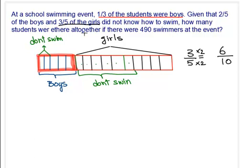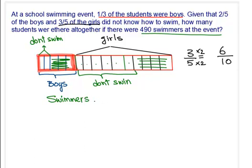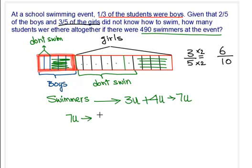How many swimmers are there altogether? For boys, 3 units swim. For girls, 4 units swim. So total swimmers equals 3 units plus 4 units equals 7 units. The number given is 490 swimmers, so 7 units equals 490, meaning 1 unit equals 490 divided by 7, which equals 70.